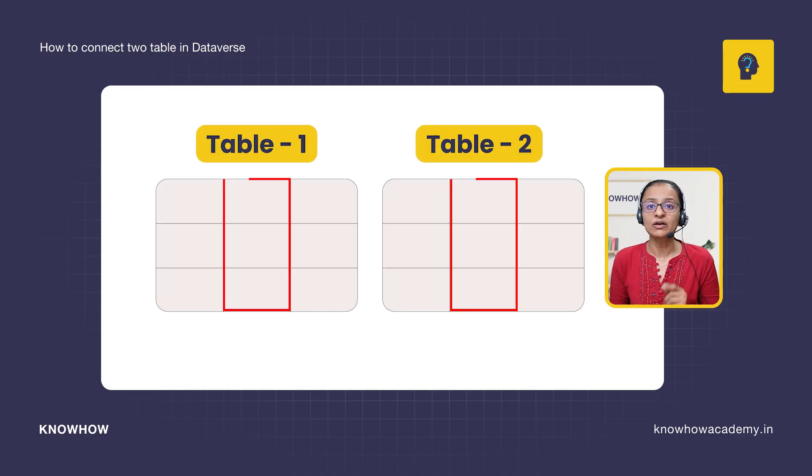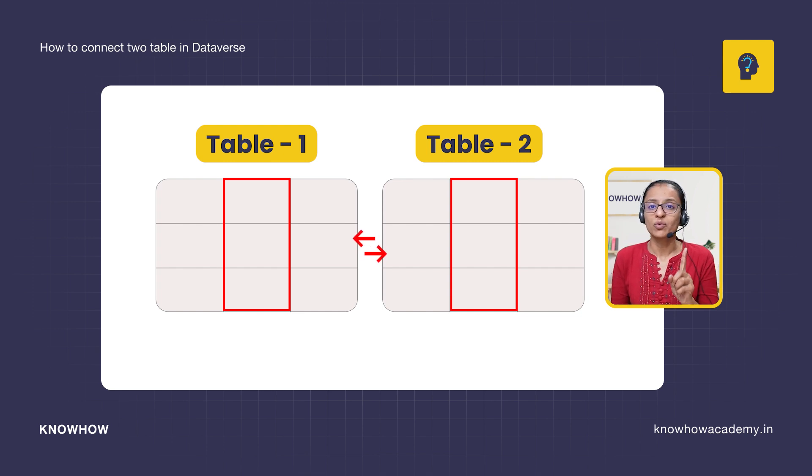Now let me tell you the second thing: what is the meaning of joining two tables in Dataverse, or what is the meaning of establishing a relationship between two tables. When two tables share one common column, we can say there is a relationship between them — they are joined using that common column. In our scenario, we will make a Department ID column in the employee table and use it to access department information from the employee table.